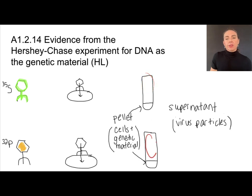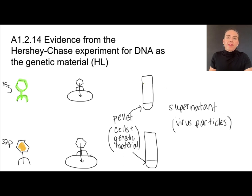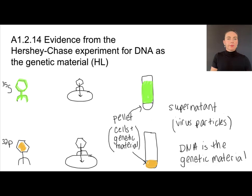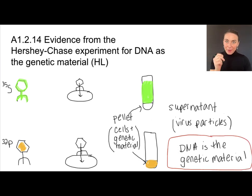They then spun these cells through a centrifuge, which separates things based on weight. The heaviest material goes to the bottom and is called the pellet, which contains the cells — and those cells now have the genetic material from the virus inside them. The liquid remaining at the top is called the supernatant, containing leftover virus particles — whatever wasn't the genetic material stays outside the cell. The bacteriophages grown in radioactive sulfur showed radioactivity in the supernatant, while those grown in radioactive phosphorus showed radioactivity in the pellet. This told them that DNA — not protein — was the genetic material being injected.